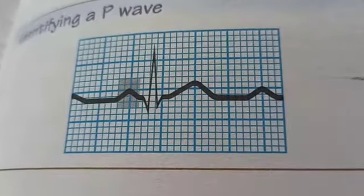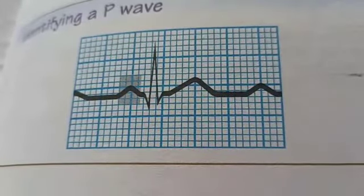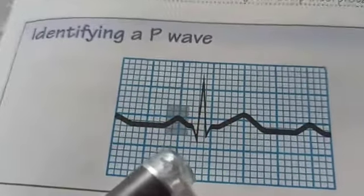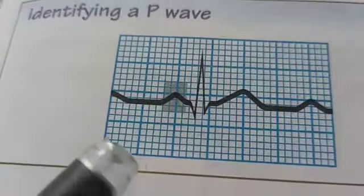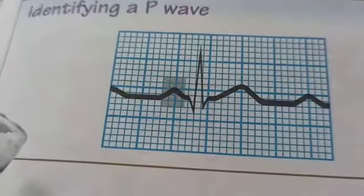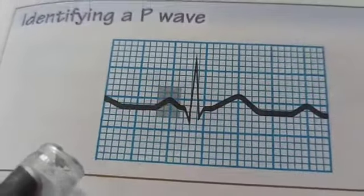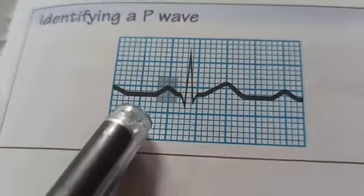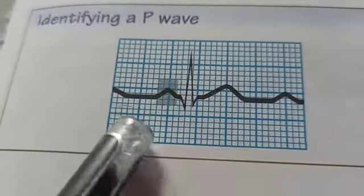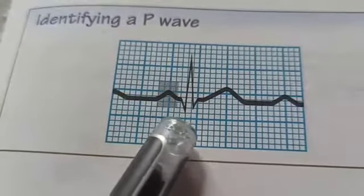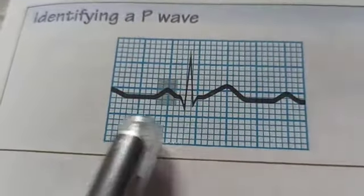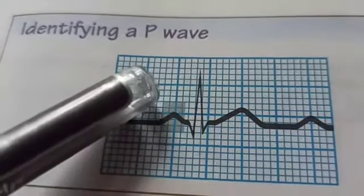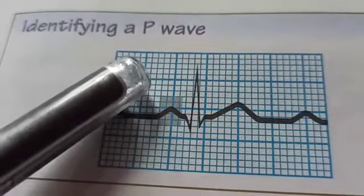The P wave represents atrial depolarization and precedes the QRS complex. It has an amplitude of less than 2.5 millimeters and a duration of 0.11 seconds. To calculate these measurements, count the small squares in the horizontal direction for duration and in the vertical direction for amplitude.